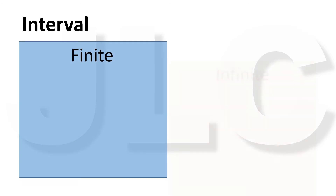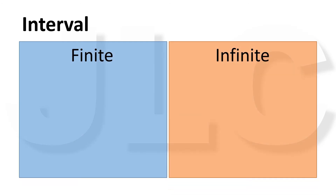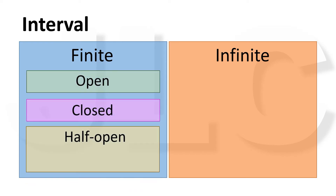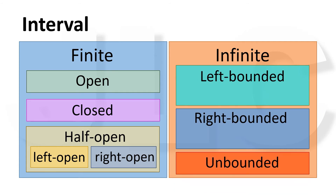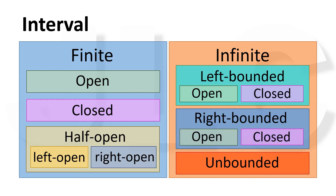An interval can be finite or infinite. A finite interval is an interval whose endpoints are real numbers. If at least one of the endpoints is infinity, then it is an infinite interval. A finite interval can be open, closed, or half-open. An open interval excludes the endpoints. A closed interval includes the endpoints. A half-open interval includes either of the endpoints. Depending on which endpoint is excluded, a half-open interval can be left open or right open. Similarly, depending on how the endpoints are bounded, an infinite interval can be left bounded, right bounded, or unbounded. Left bounded and right bounded intervals can be open or closed. In other words, we have nine basic types of intervals.